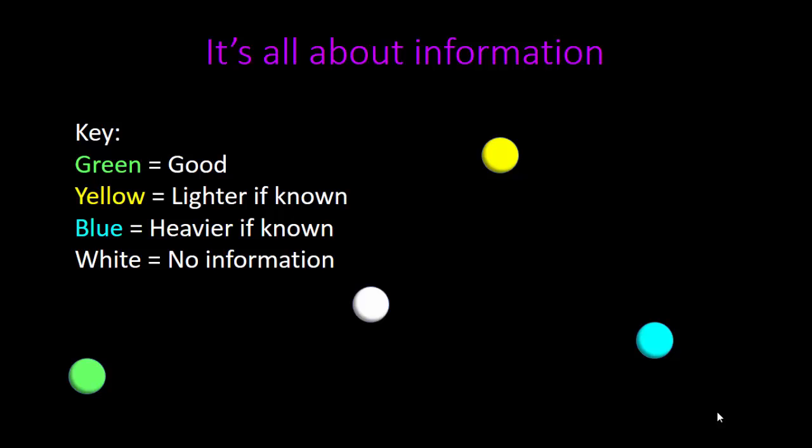So let's begin by creating a color key to help us stay organized. Here we have green representing the good, or the marbles of normal weight. Yellow means lighter if known. In other words, if you know a marble is irregular and it's colored in yellow, then you know it's lighter than normal.